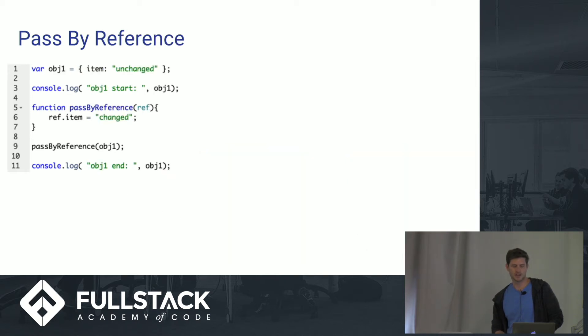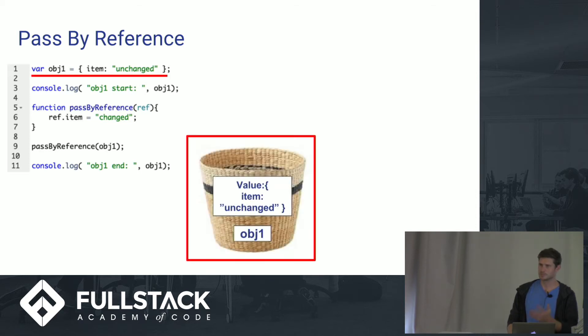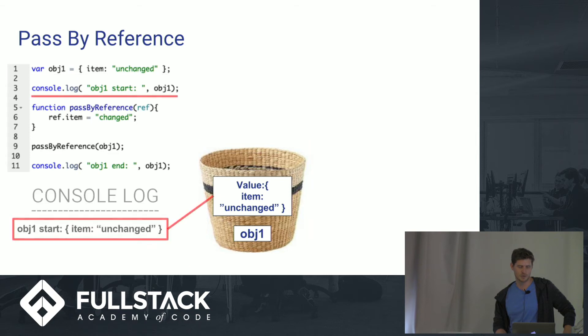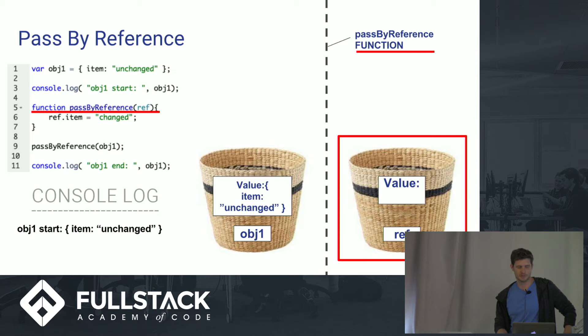So let's jump into pass by reference. So this is a similar setup here, except we've got an object 1 that we're using. And I've also changed the function to pass by reference. So same type of setup here. We've got a basket named object 1 and we're passing it an object with an item property set to unchanged. We're console logging out that value, and then we're defining a function called pass by reference. I've renamed the basket here to reference to kind of make it a little easier to understand.